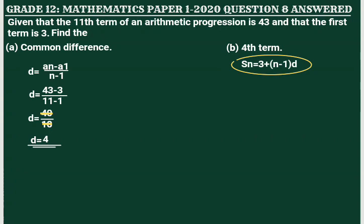N inside the brackets is the position of the number we are trying to find, and we are told we should find the fourth term. We then subtract 1 from that position — that is just the rule of the formula.